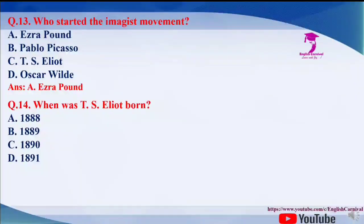Question number 14: when was T.S. Eliot born? Options are A. 1888, B. 1889, C. 1890, and D. 1891. The correct answer of this question is A, that is 1888.